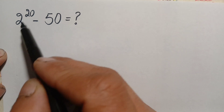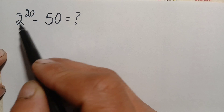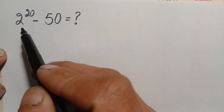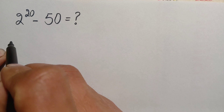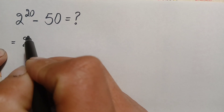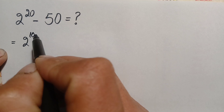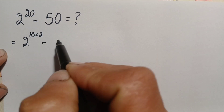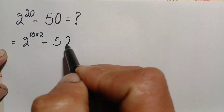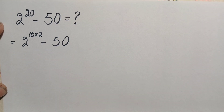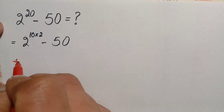First of all, we try to find out the value of 2 raised to power 20, and then we subtract 50 from that result. We can write 2 raised to power 20 as 2 raised to power 10 times 2, which is 20, minus 50.